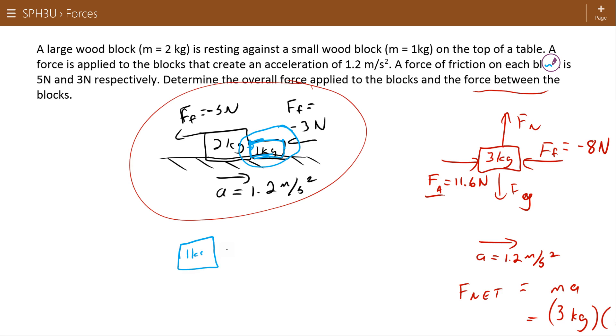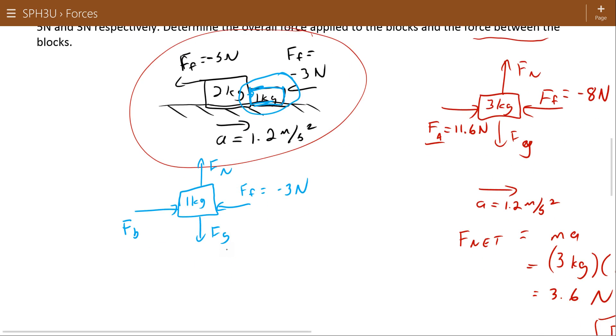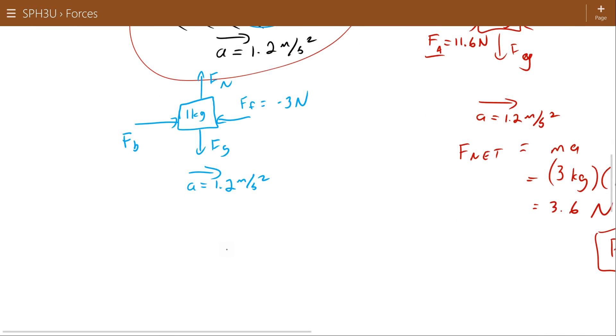1 kilogram, F_G, F_N, some sort of F between the blocks. I'm going to call it F_B. The force of friction acting back on this block is going to be negative 3 Newtons. And again, our acceleration is 1.2 meters per second squared.